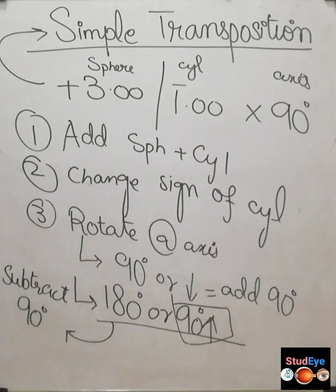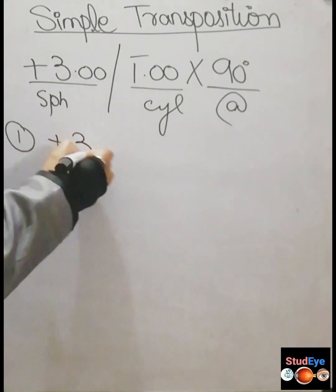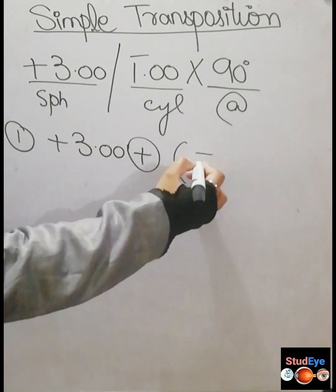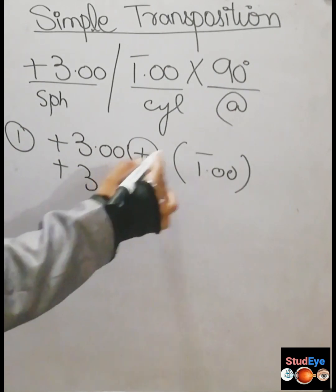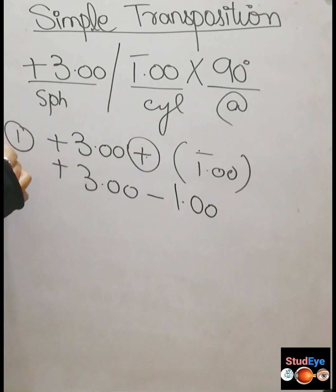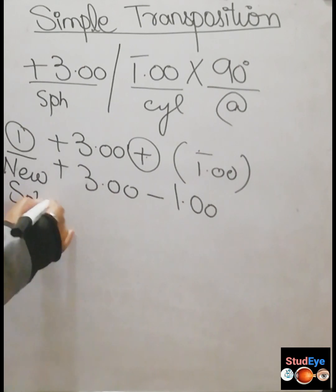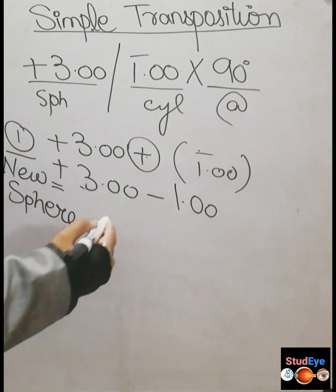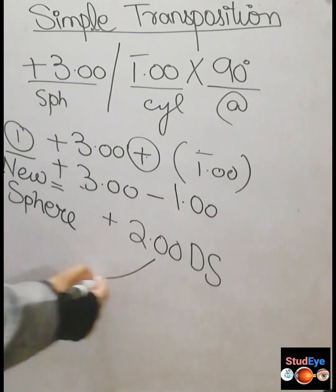Now working through the example: we have plus 3 sphere and minus 1 cylinder. Step 1 — add the sphere to the cylinder: plus 3 plus (minus 1) equals plus 2 diopters. So the new sphere of the transposed prescription is plus 2 diopters.